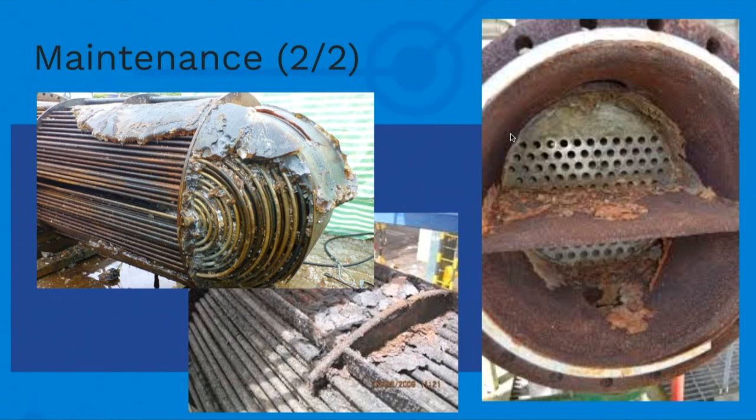Here are more examples. This is outside the tubes—inside the shell but outside the tubes. You can see the fouling material. It might be very caustic, dirty, or contain impurities that cause fouling and deposits.